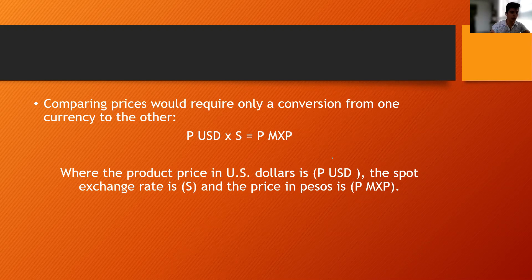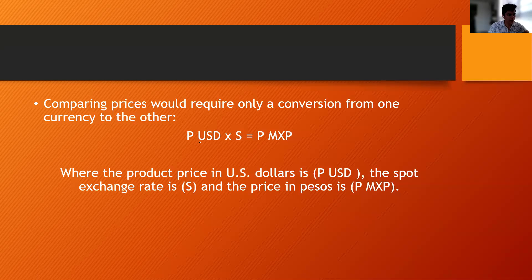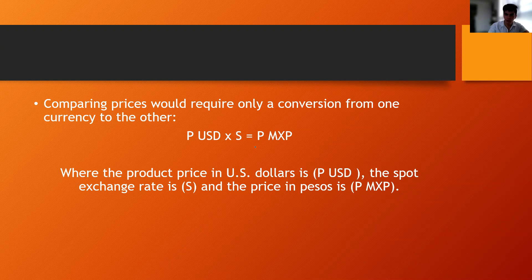So the original formula looks like this: the price in the US, this is a foreign country, if you multiply the price times the spot rate, the spot rate is the exchange rate in the present, that's the meaning of spot, then you have the price in Mexico, this is a local price.